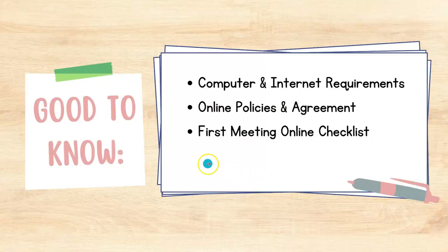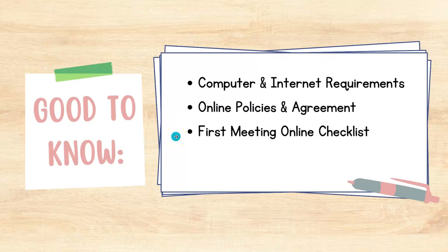It's also helpful to know things when getting started, like what kind of computer you need, what specifications are required for teaching online in terms of computer specs and internet, what online policies or agreements you can use to help spell things out when working with your families, and even a first meeting online checklist. The first time you meet with a family, you go through a list of things to cover possible situations — like no sound — and how to deal with them so you get off to a good start.